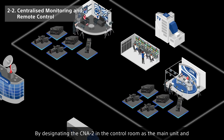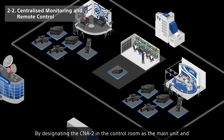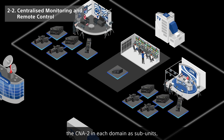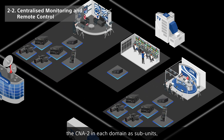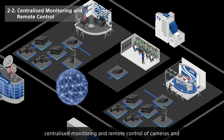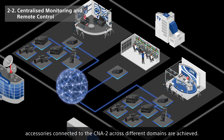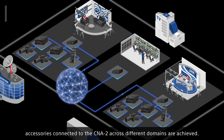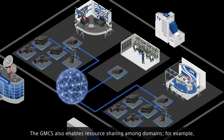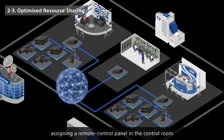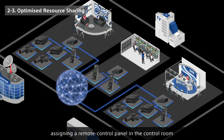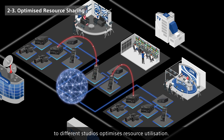The system's ability to support multiple domains ensures seamless scalability for future expansion. By designating the CNA2 in the control room as the main unit and the CNA2 in each domain as subunits, centralized monitoring and remote control of cameras and accessories connected across different domains are achieved. The GMC-S also enables resource sharing among domains — for example, assigning a remote control panel in the control room to different studios optimizes resource utilization.